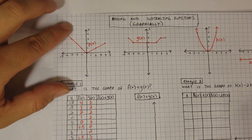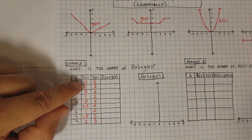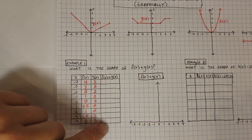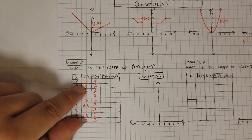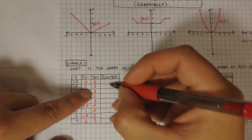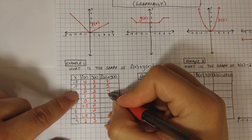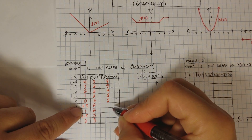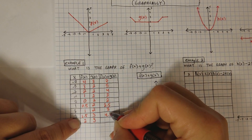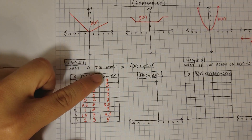Now that I have all the values in my table, I don't have to worry about the graph anymore. All I have to do is add the two numbers together. So f(x) plus g(x): 4 + 3 = 7, 3 + 2 = 5, 2 + 2 = 4, 1 + 2 = 3, 0 + 2 = 2, 0.5 + 2 = 2.5, 1 + 2 = 3, 1.5 + 3 = 4.5, and 2 + 3 = 5. My values are all done.